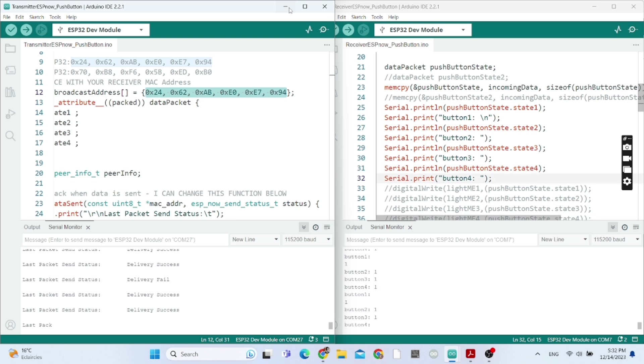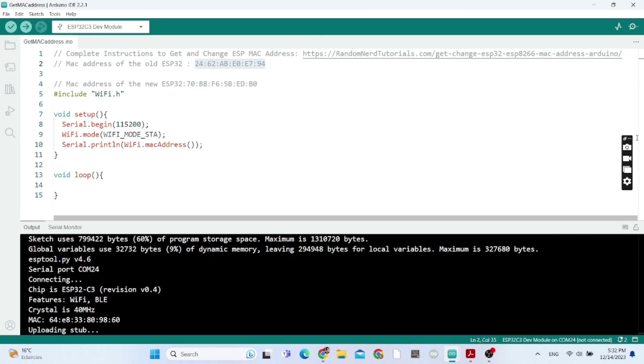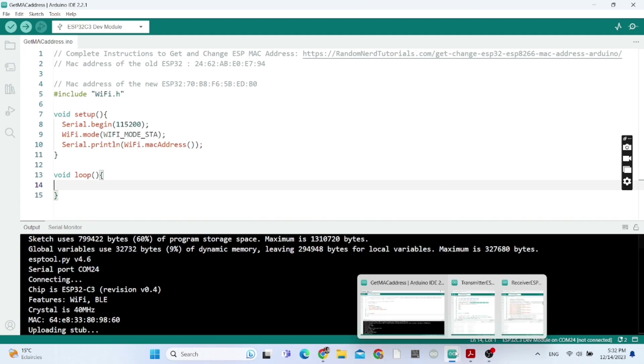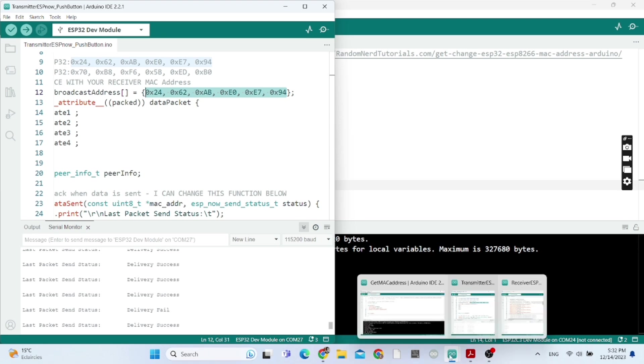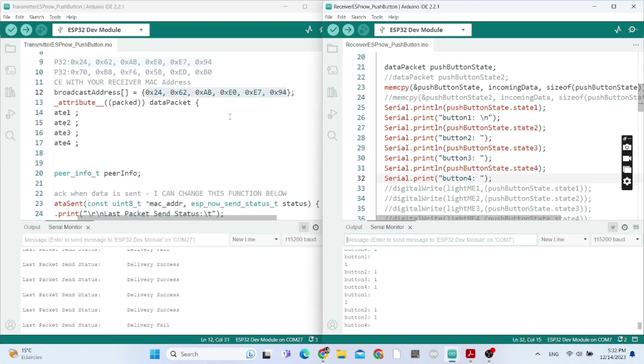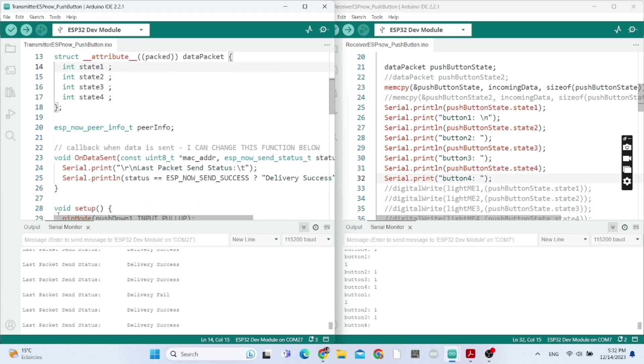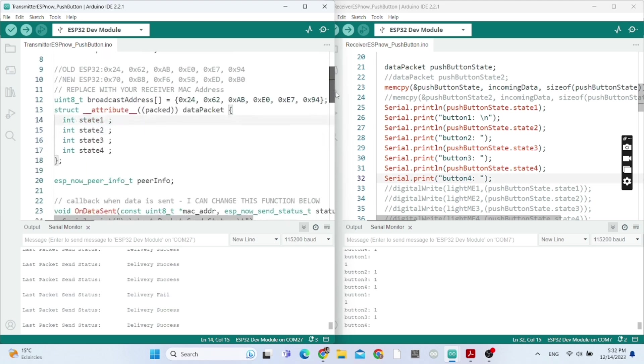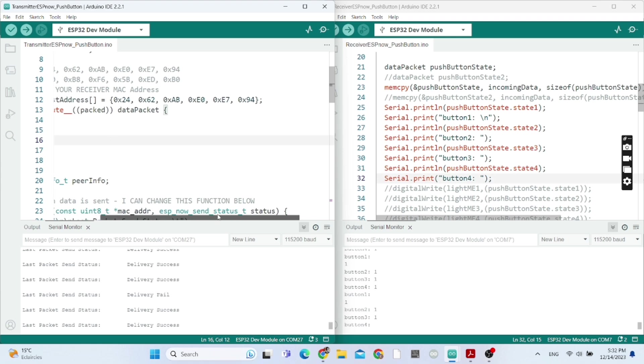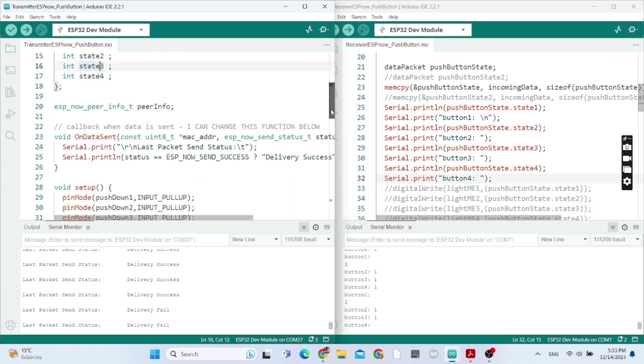So here it has the MAC address of the receiver. You need to know the MAC address. To know that, you write this code and upload it to the receiver board to know its MAC address. So I'm going to provide these codes in the video description. So here with the state of the four push buttons: state 1 is for push button 1, state 2 for push button 2, and so on.